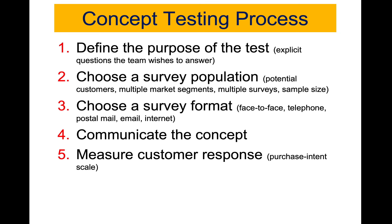The fifth step is measuring customer response. After communicating the product concept to respondents, you measure their response. One modality is a five-point scale with the selections: I would definitely buy, I would probably buy, I might or might not buy, I would probably not buy, and I would definitely not buy. This scale gives us information about customer response and feeds into our demand forecast.